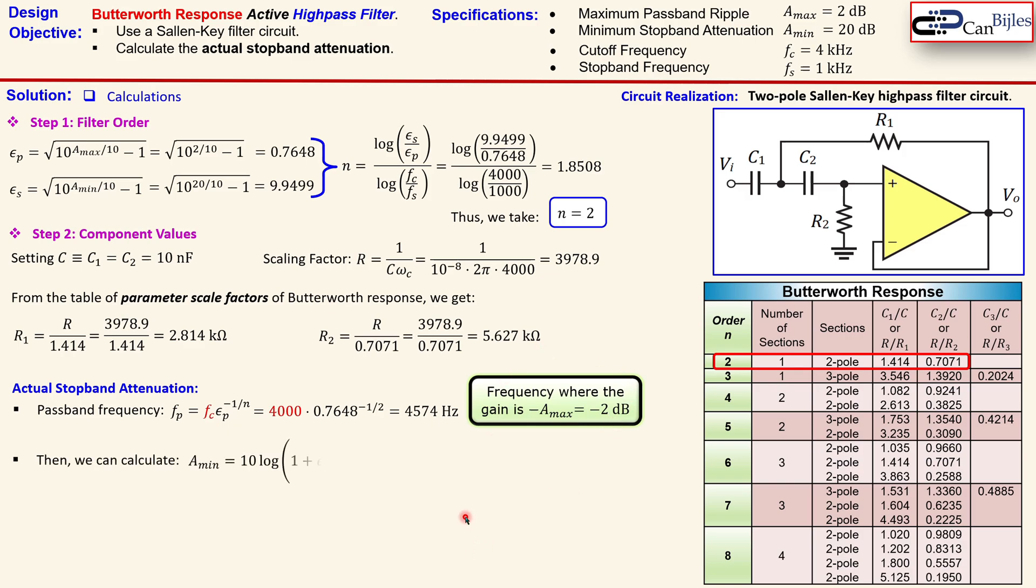Then we can calculate now the A_minimum actual that is then given by this formula. You see here the stopband frequency, the passband frequency, the filter order n and also the epsilon_p. Now substitute the values in here, you get here 24.1 dB. You can also for this case calculate the A_minimum actual using the formula where you have the cutoff frequency, which is in this case much faster and more straightforward. Now we have only the cutoff frequency and the stopband frequency, the filter order. So you don't need here the epsilon_p and you don't need to calculate the passband frequency. So this goes much faster.